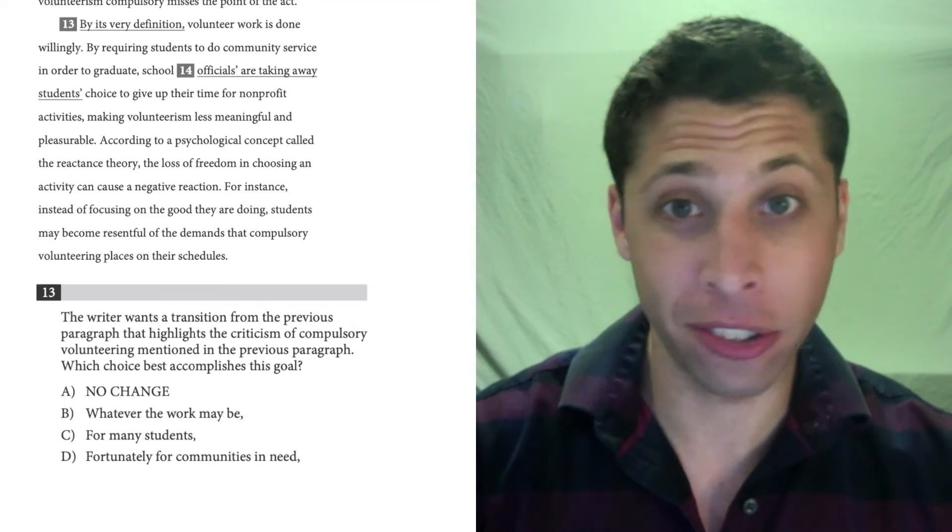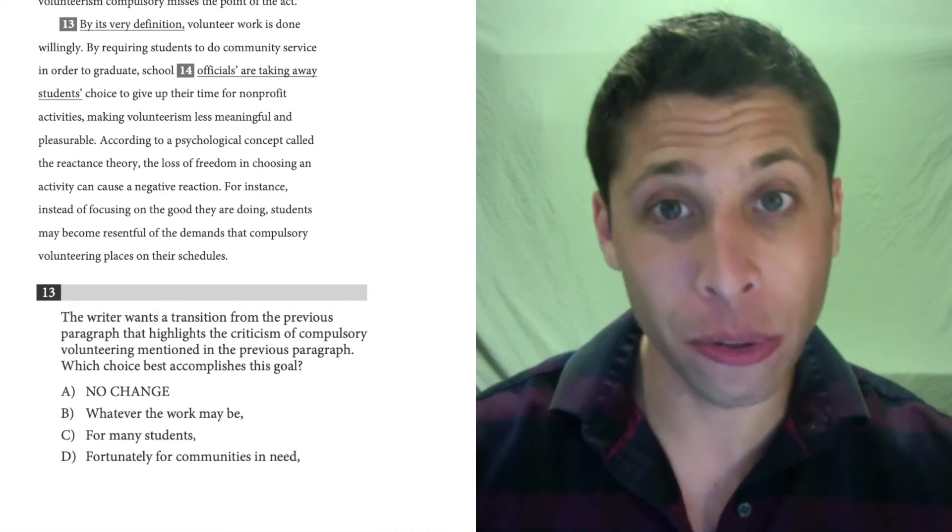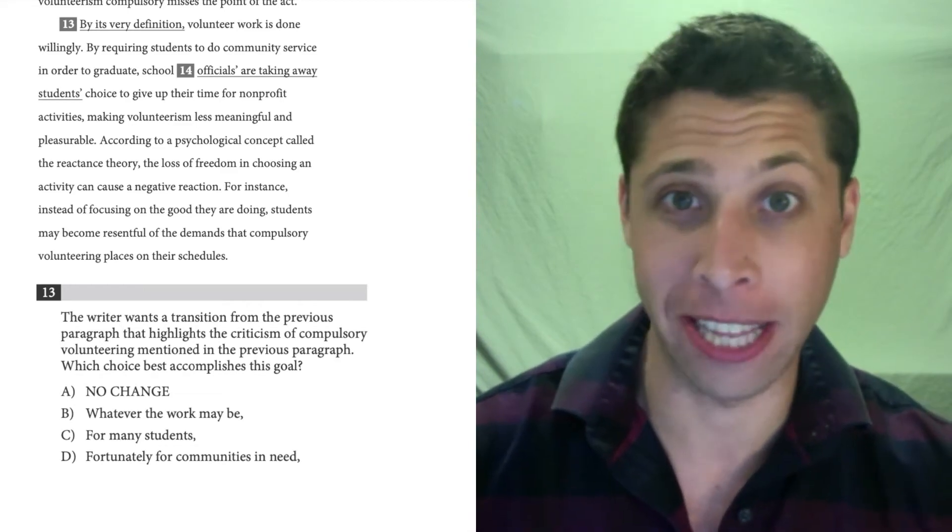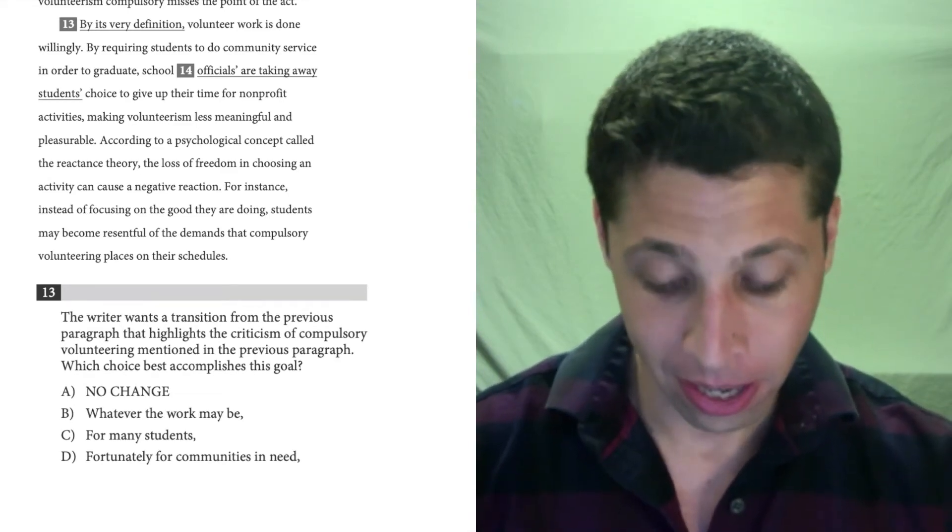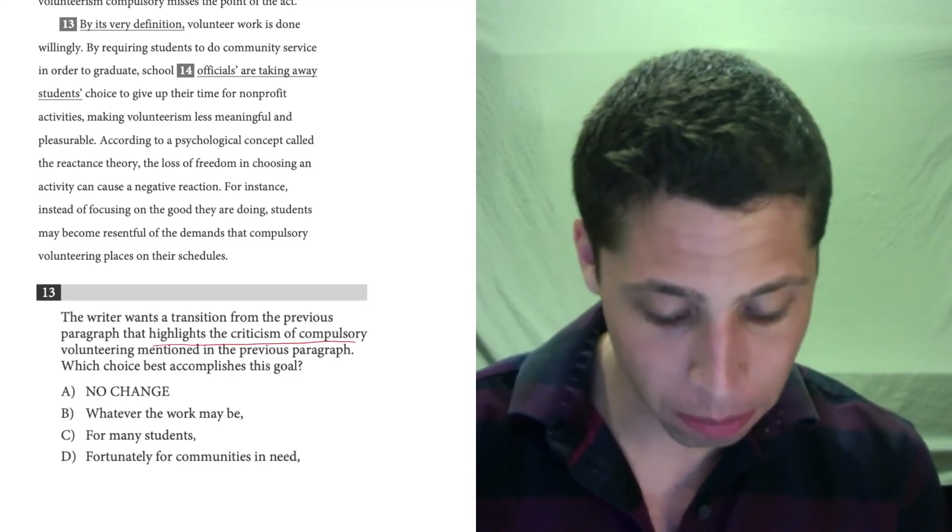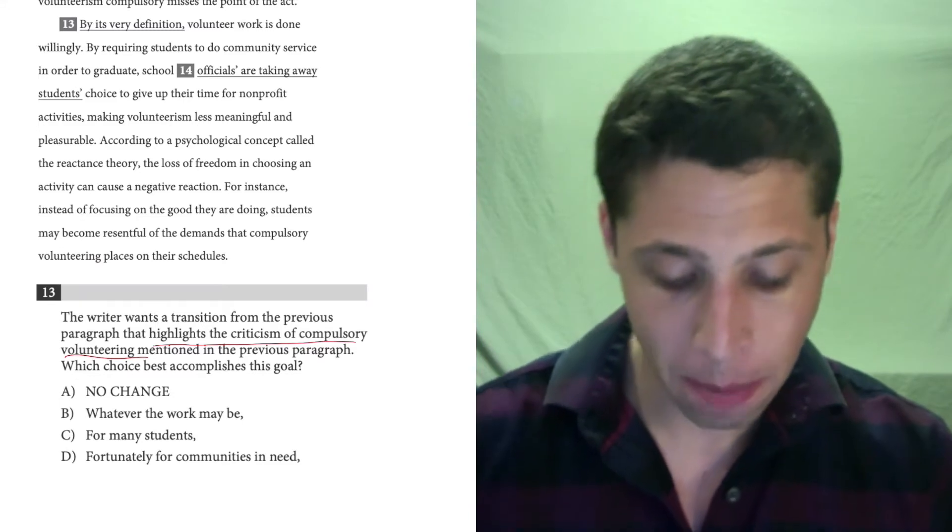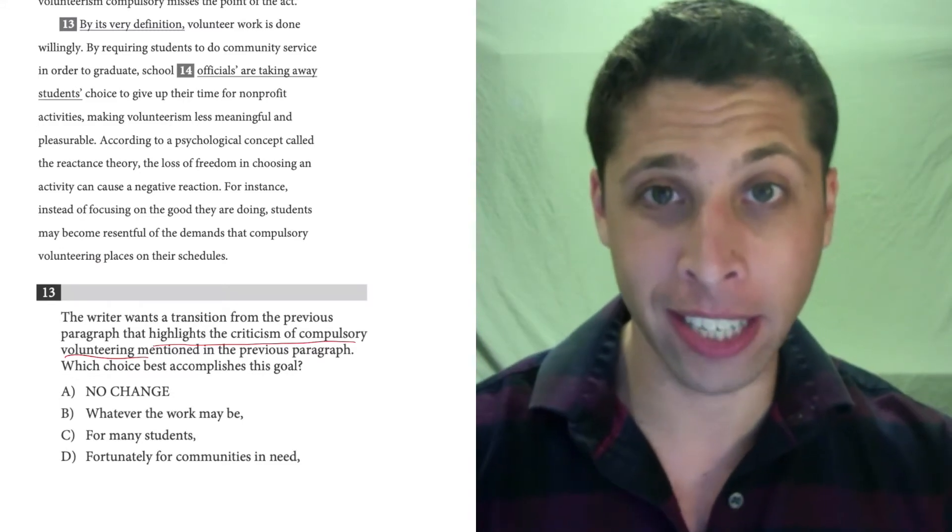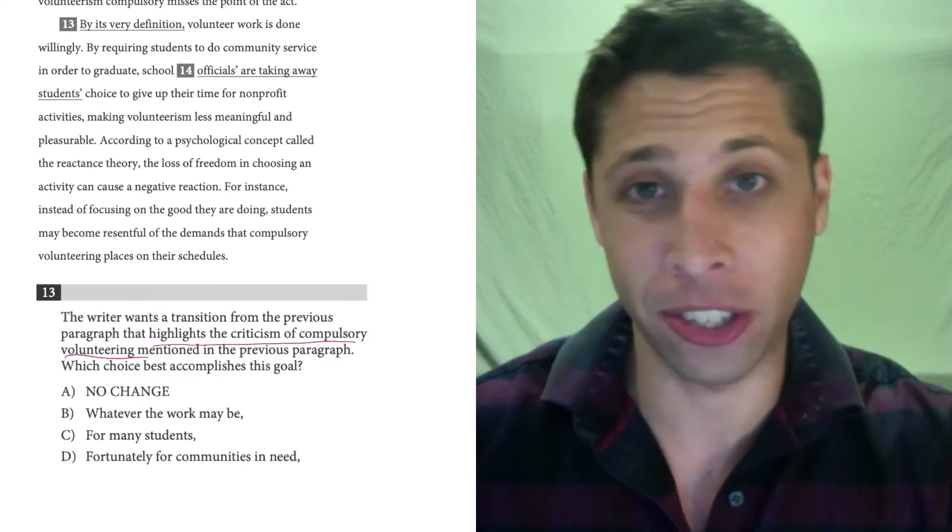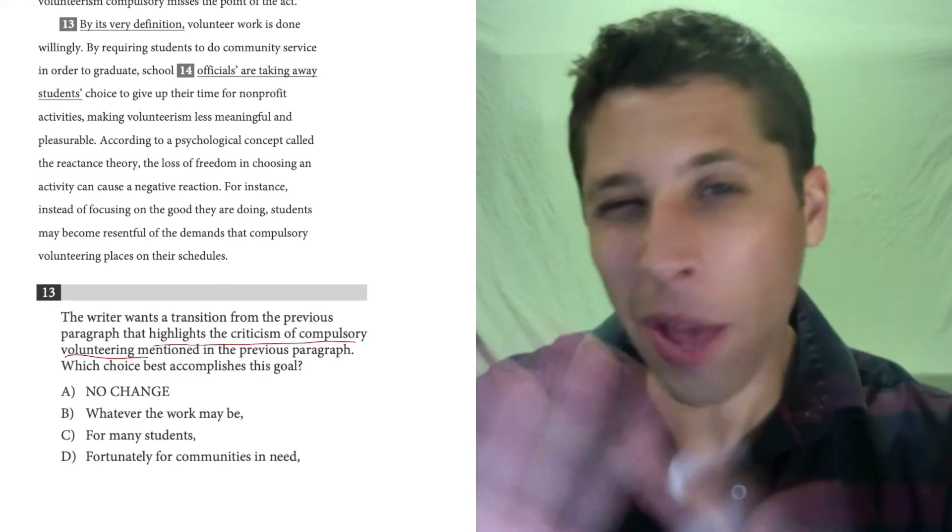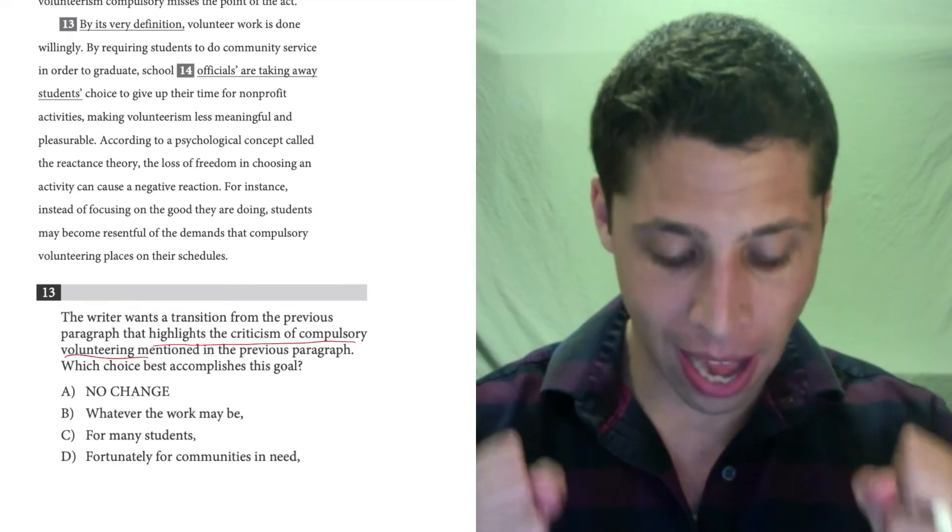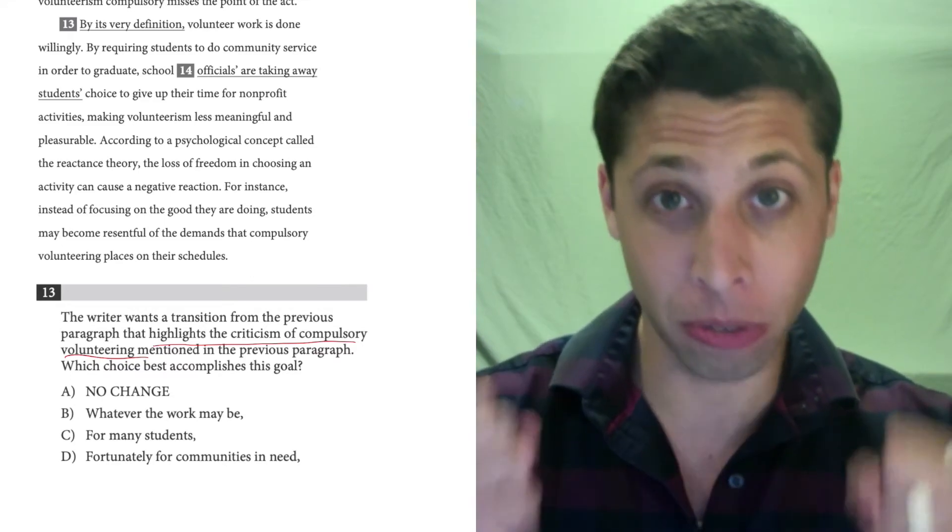So that's just a good example of just narrow your focus, try to get this question down to the most simple idea you can, and then let's look for that idea in the passage. So what are they saying here? The writer wants a transition from the previous paragraph that highlights the criticism of compulsory volunteering mentioned in the previous paragraph. So the part I underline is the part that they're specifically asking for. Obviously a transition is going to have something to do with the previous paragraph. That part is just kind of intuitive. The thing that they really want from us is it needs to highlight the criticism of compulsory volunteering.